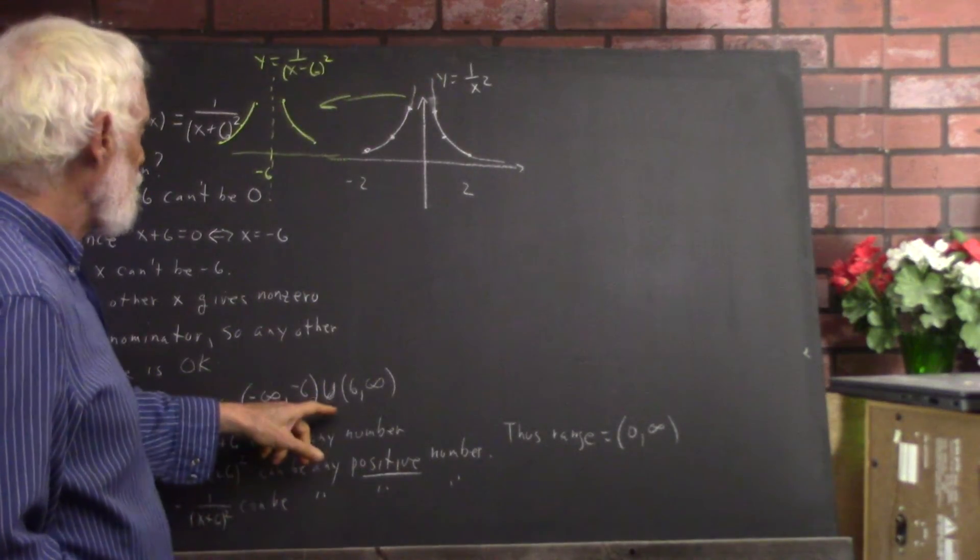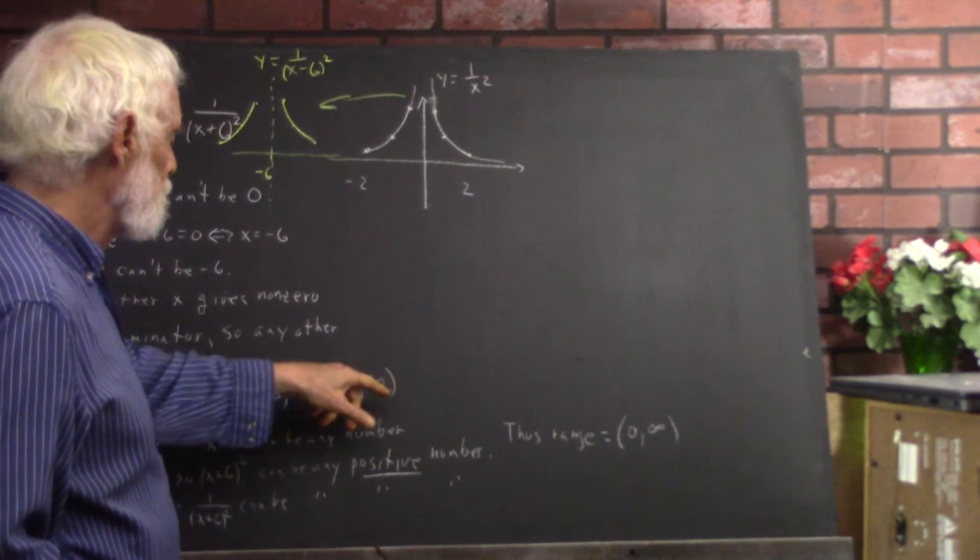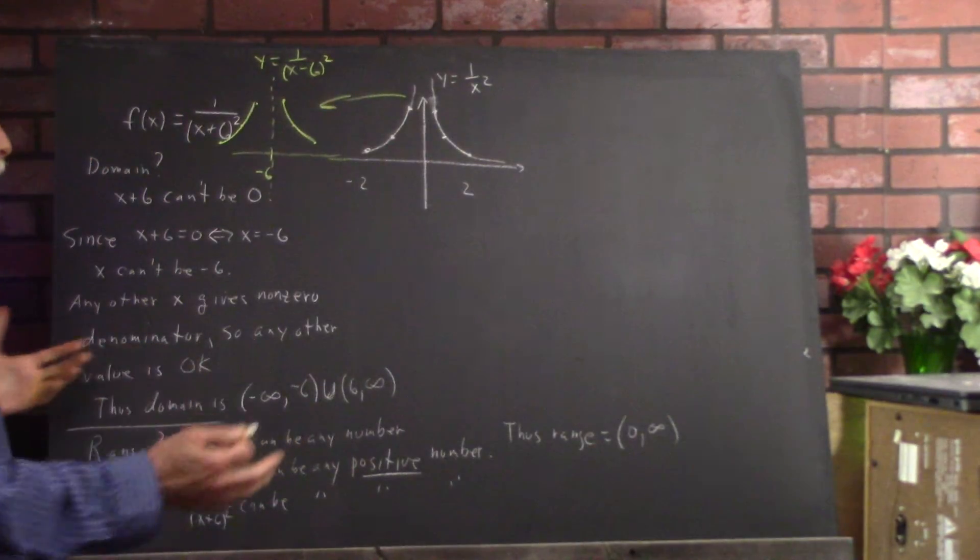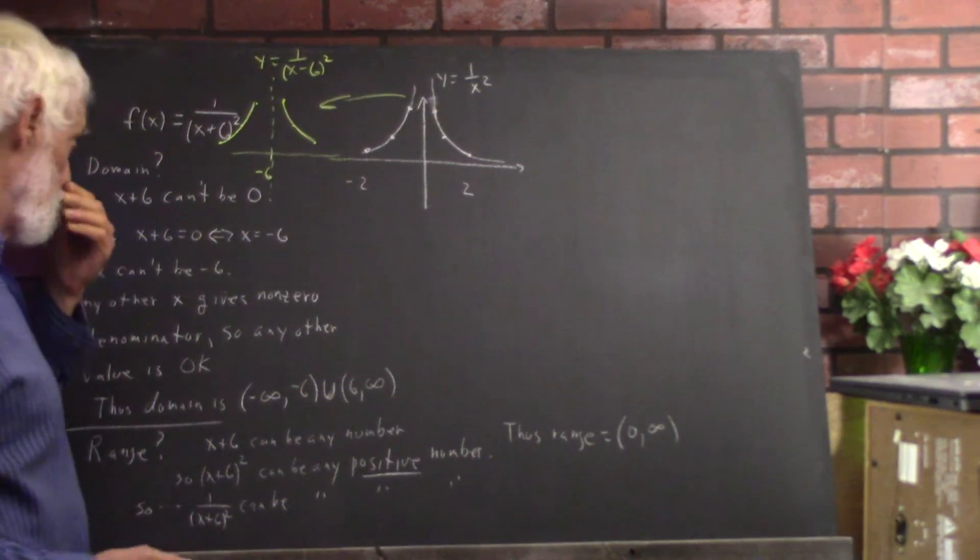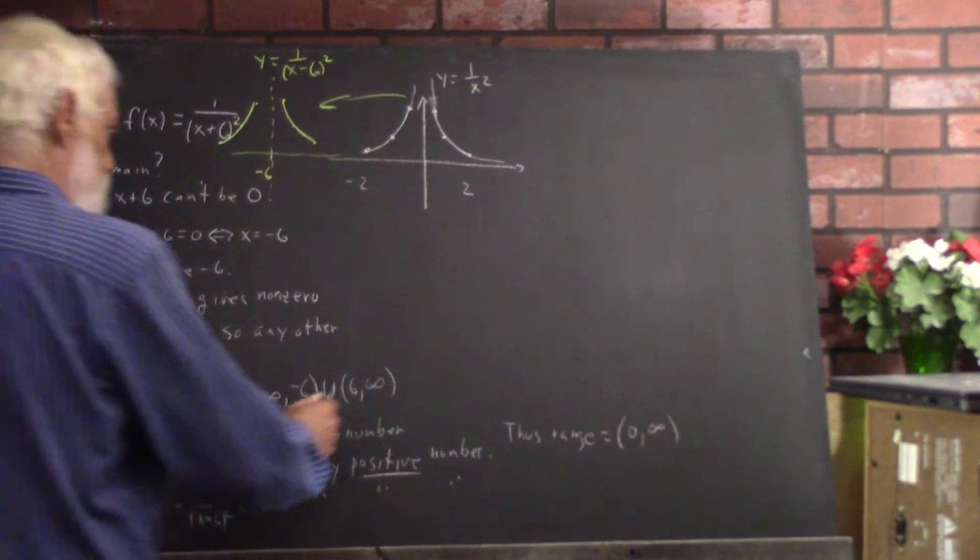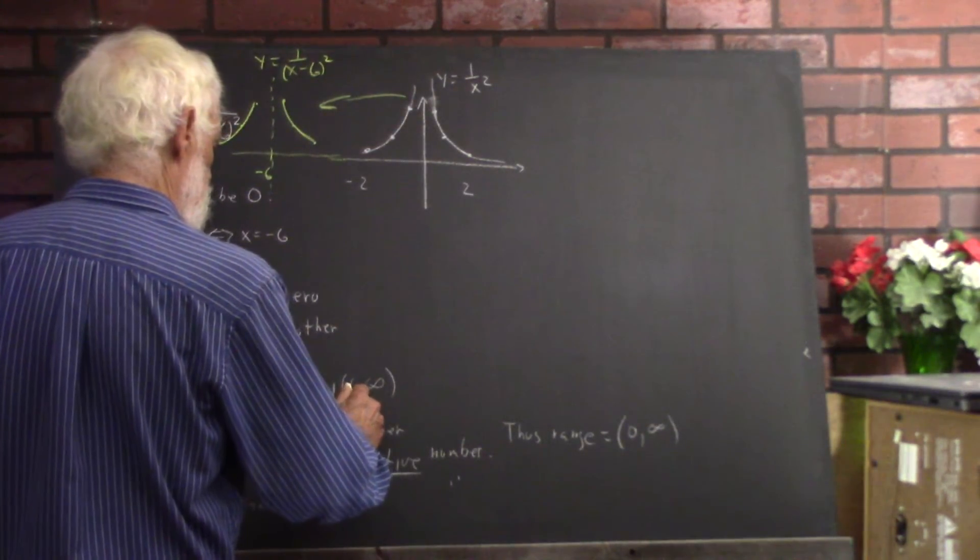So any other value is okay. The domain is the set negative infinity to negative 6 open interval union the interval negative 6 to infinity open interval. In other words, the set of all real numbers except for negative 6.